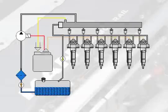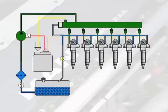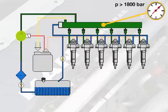In engines with common rail fuel injection systems, the injection pressure is built up independently from the load and engine speed. The single-stage high-pressure pump generates a pressure of over 1,800 bar,